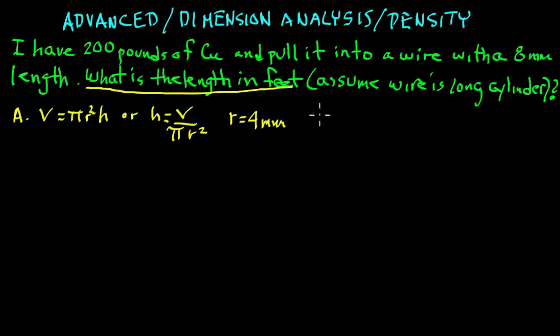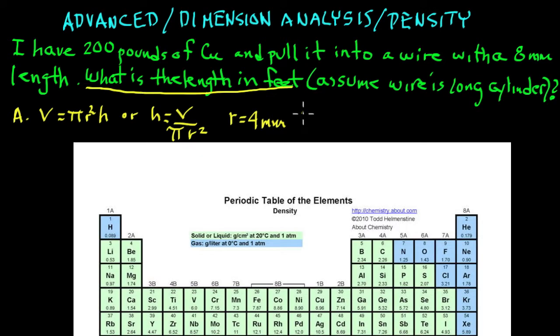And finally we know the density of copper. We can look it up. Look on the chart here. Can you find it? Copper. The density is 8.96 grams per cubic centimeter.